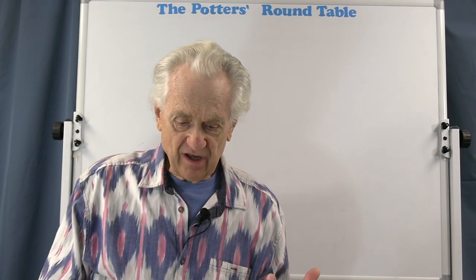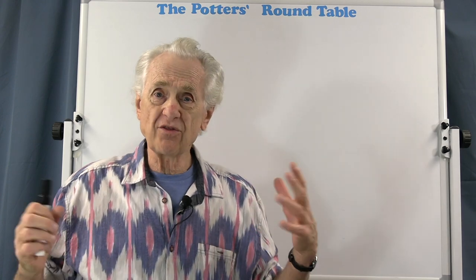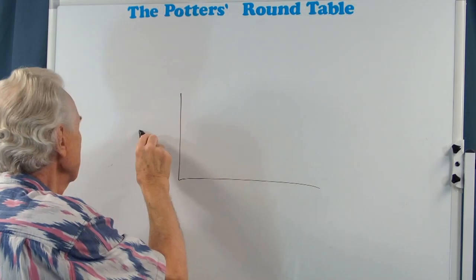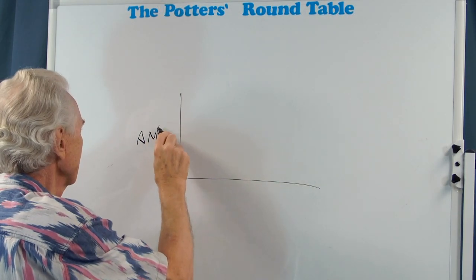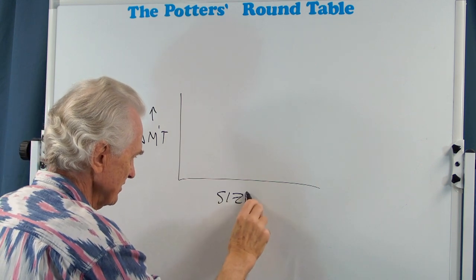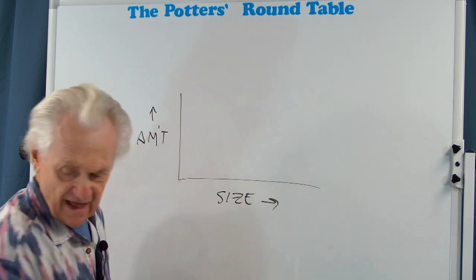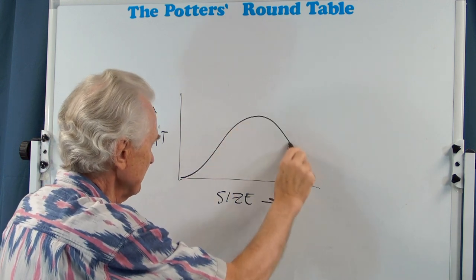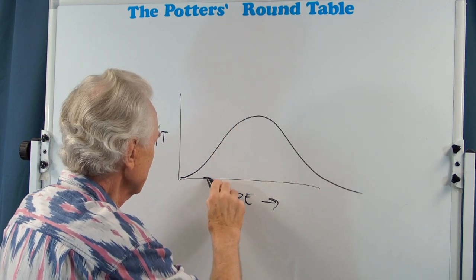Here's another example that shows the different width or the range of sizes. So again, this is the amount increasing. This is the size increasing. And so I have one, one, one range that looks like this. And I have another one that looks like this.